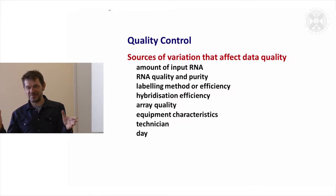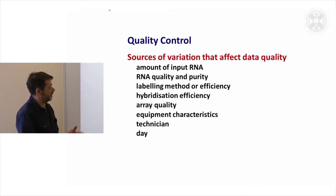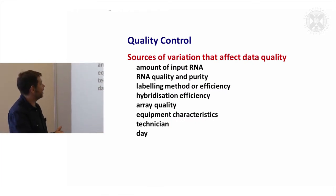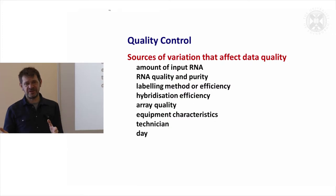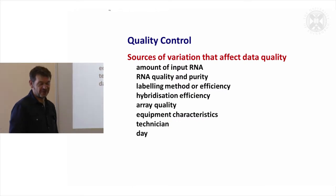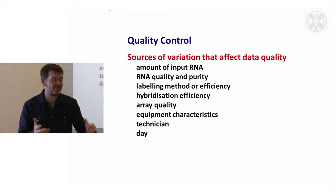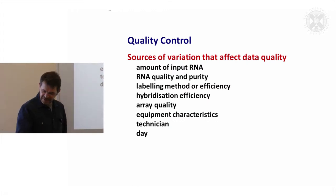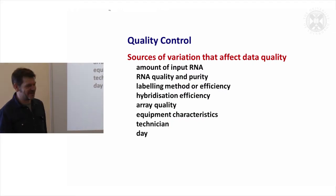In terms of producing an array or RNA-seq experiment: the amount of RNA you put in, whether it's degraded or contaminated with other stuff, how well you labeled the sample, what method you used to label the sample, how the hybridization efficiency worked that day, the array quality, the equipment characteristics, which machine did you run it on, who actually ran it, what day of the week was it run on. Sounds a bit daft, but I remember in the early days talking to some guy from Pharma who said all the data they did on Wednesdays was never any good.